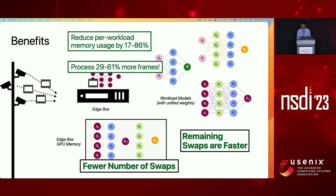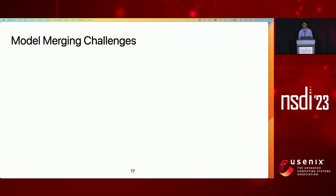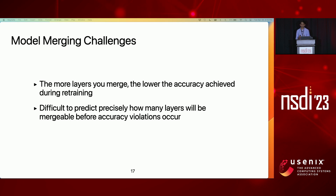Achieving these benefits hinges on being able to find unified weights for layers across models with shared definitions. To do this, we propose model merging, where we jointly retrain the models in our workload such that some or all of their layers with shared definitions use the same set of weights. We can build on classic multi-task training techniques, and for each layer that is shared across models, the optimizer only needs to hold a single copy of these weights. However, achieving these benefits is complicated by the fact that there exists an inverse relationship between the number of merged layers and the achieved accuracy during retraining. Determining the right layers to merge is further complicated because it's difficult to predict precisely how many layers will be shareable before accuracy violations occur, and each instance of retraining is costly.